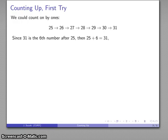So, what can I conclude from this? How far did I have to count? I had to count 1, 2, 3, 4, 5, 6 numbers. 31 is the sixth number after 25, which tells me that 25 plus 6 is 31, and 31 minus 25 is going to be 6.